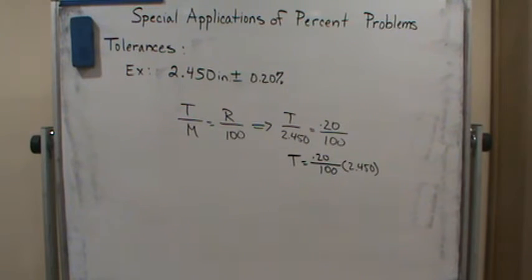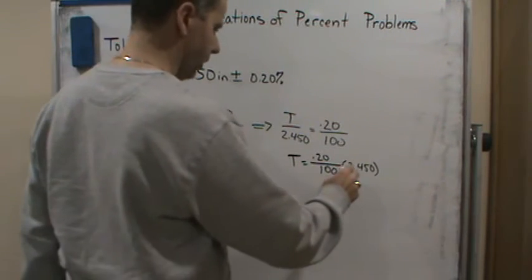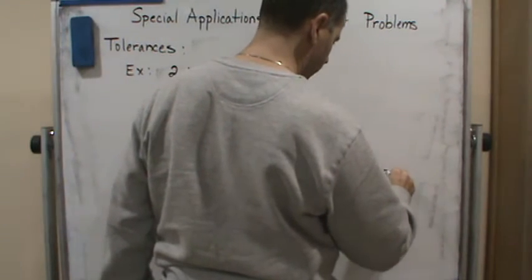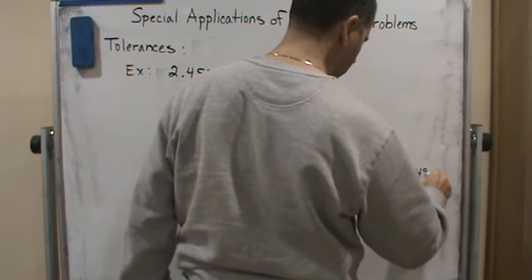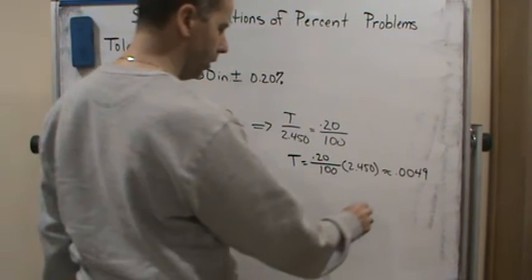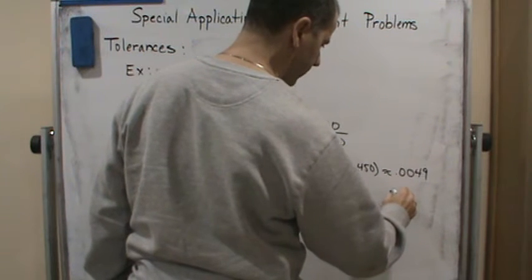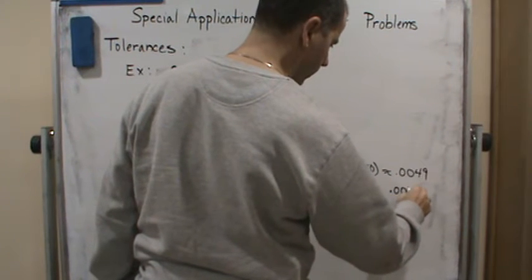I will get 0.0049. So 0.0049, or we can just say 0.005.